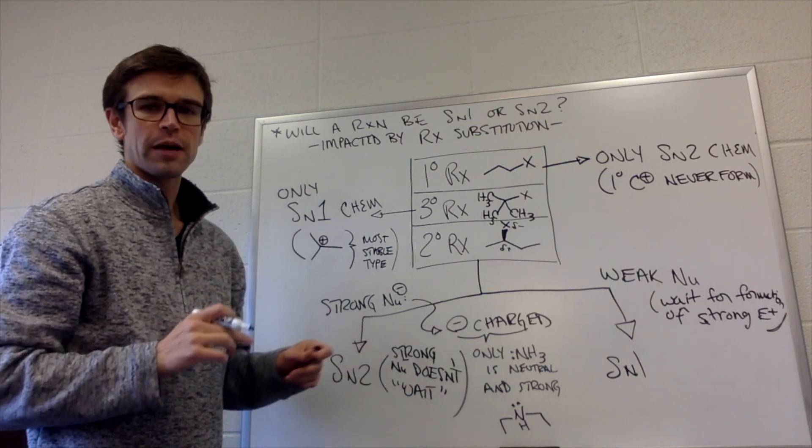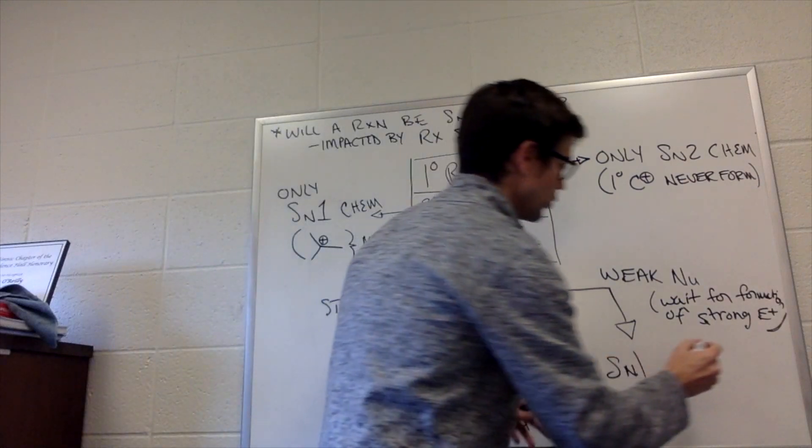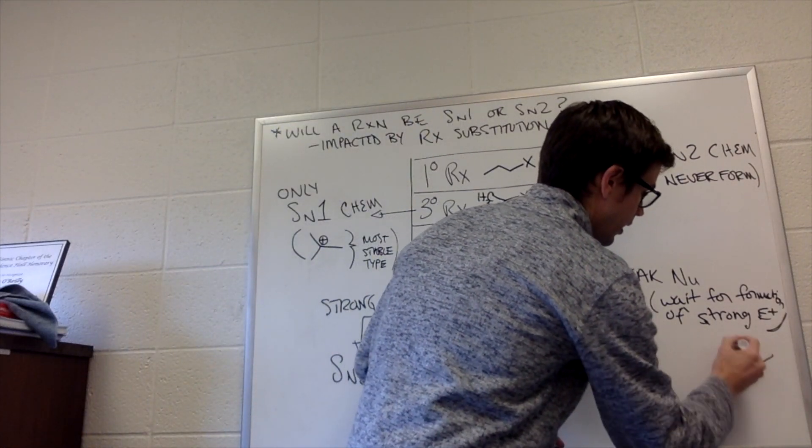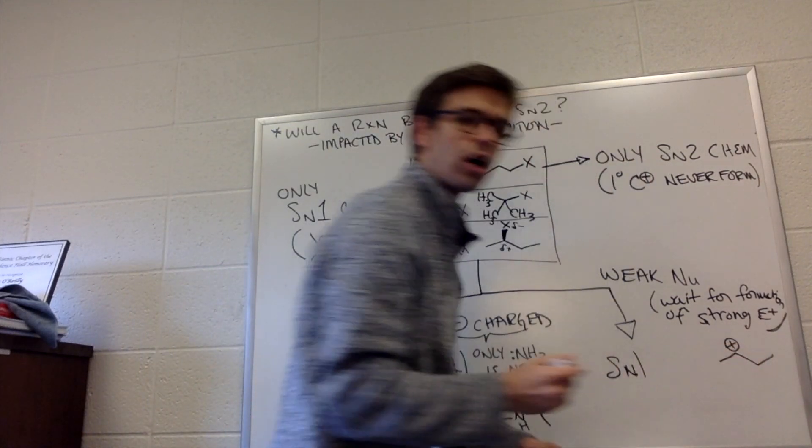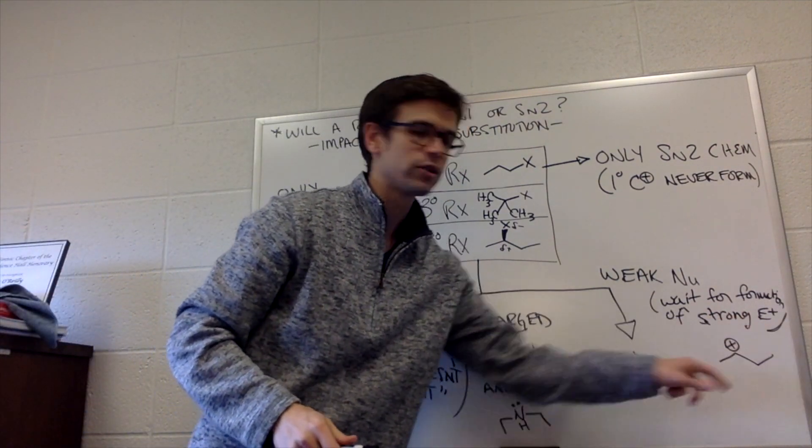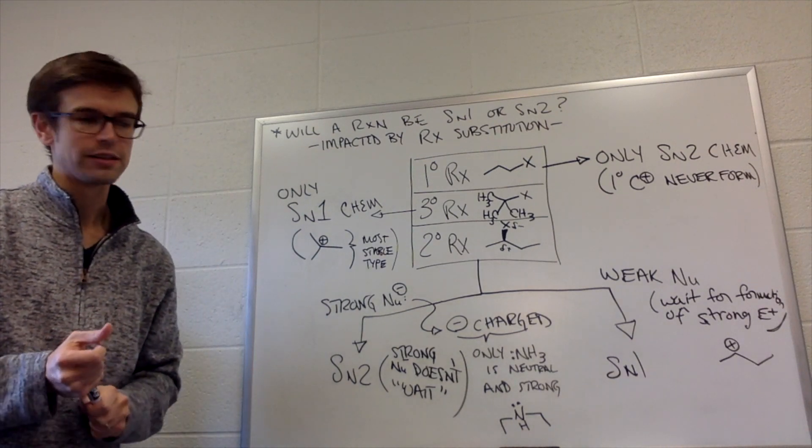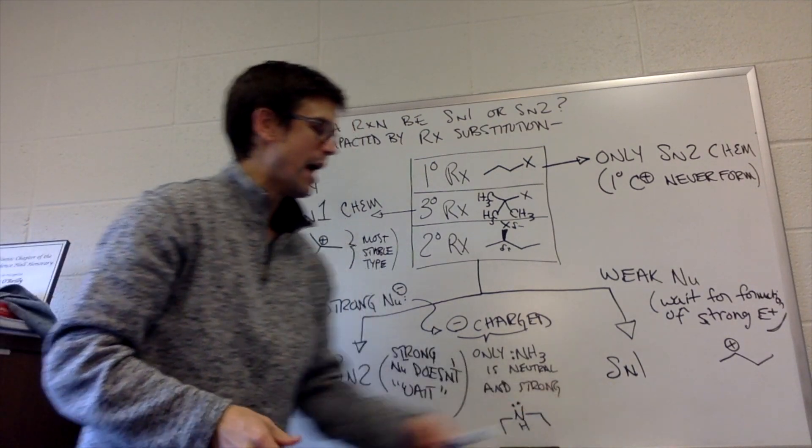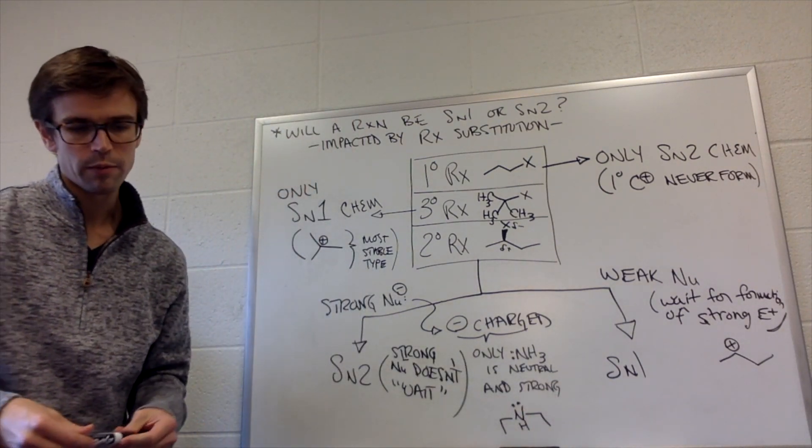What happens if we do SN1 chemistry? If we're doing SN1 chemistry, the nucleophile is adding to a full positive charge on a carbon. So if we have a weak nucleophile, we need a stronger electrophile to balance the process out, which means that it has to go by an SN1 process.